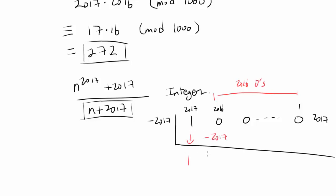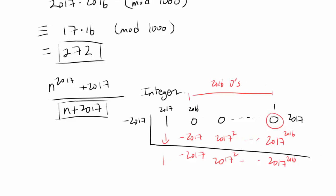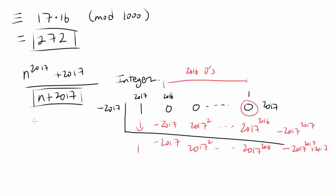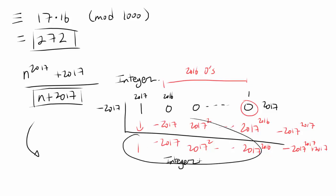Working through the synthetic division: we bring down 1, multiply by negative 2017 to get negative 2017, then negative 2017 times negative 2017 gives 2017 squared, and so on. It's not difficult to see that for the last zero we get 2017 to the 2016 power, and multiplying again by negative 2017 gives negative 2017 to the 2017. We end up with negative 2017 to the 2017 plus 2017 as the remainder. This fraction can be written as a sum of integer terms, and since all of them are integers, adding or subtracting them gives an integer, with the remainder term left over.